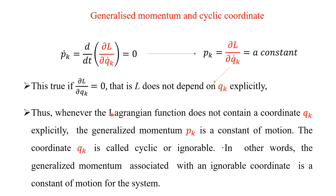Thus, whenever the Lagrangian function does not contain a coordinate q_k explicitly, the generalized momentum P_k is a constant of motion. The coordinate q_k is called cyclic or ignorable because we can ignore it since L does not depend on q_k. In other words, the generalized momentum associated with an ignorable coordinate is a constant of motion for the system.